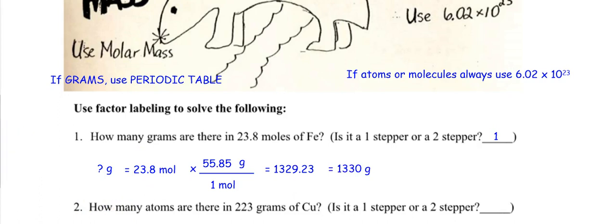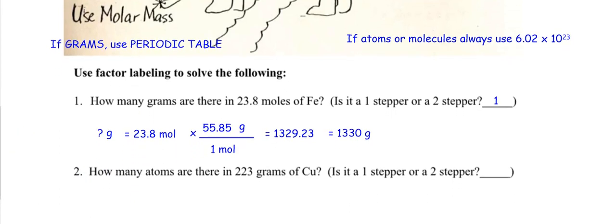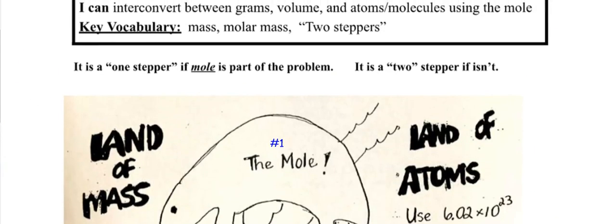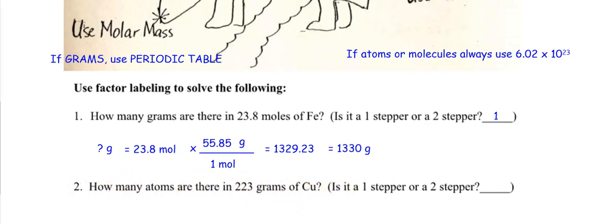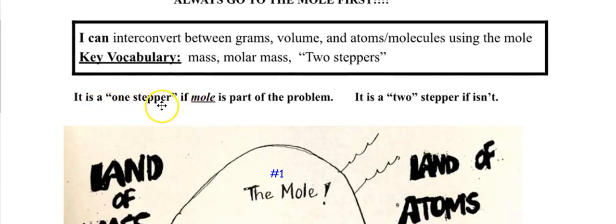How about number two? How many atoms are there in 223 grams of copper? Is it a one-stepper or a two-stepper? Let's look. The words are grams and atoms. What word do you not see? The word mole is not part of the problem. Is the word mole in the problem? No, it's not. So it's not a one-stepper — it must be a two-stepper.